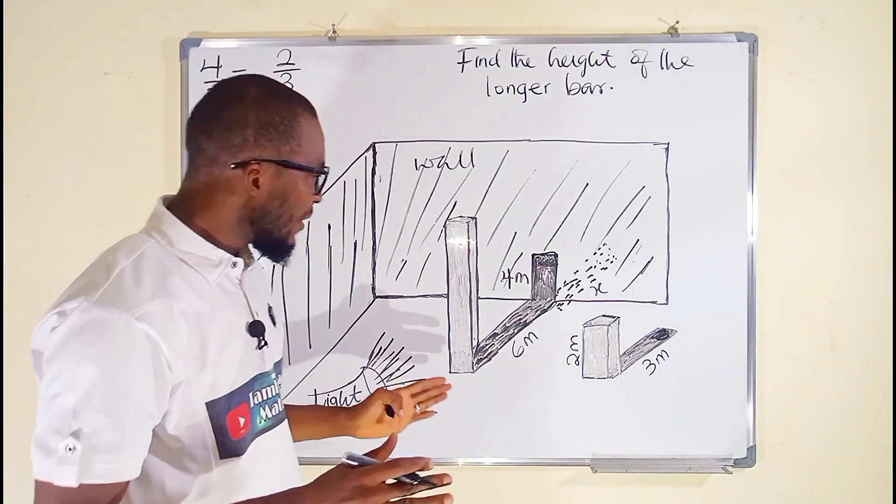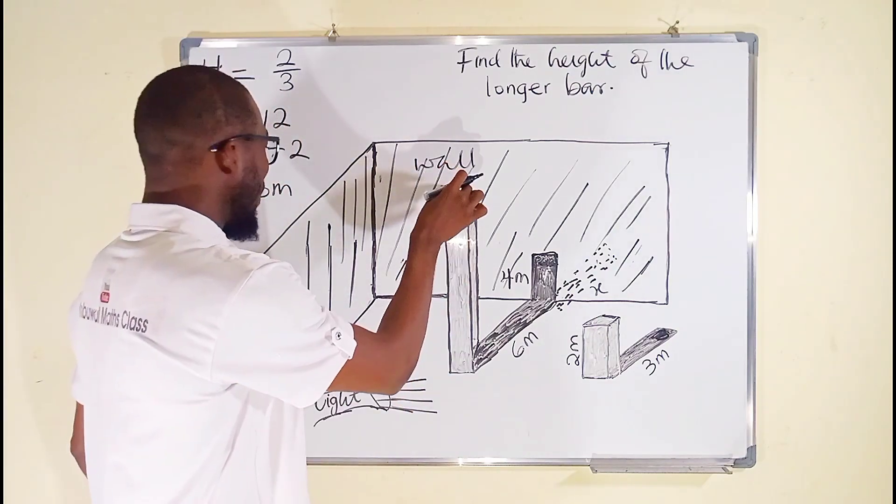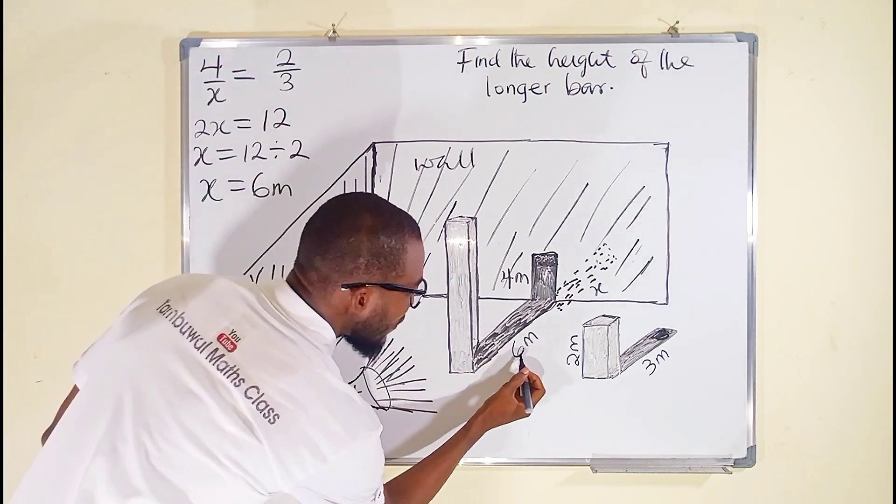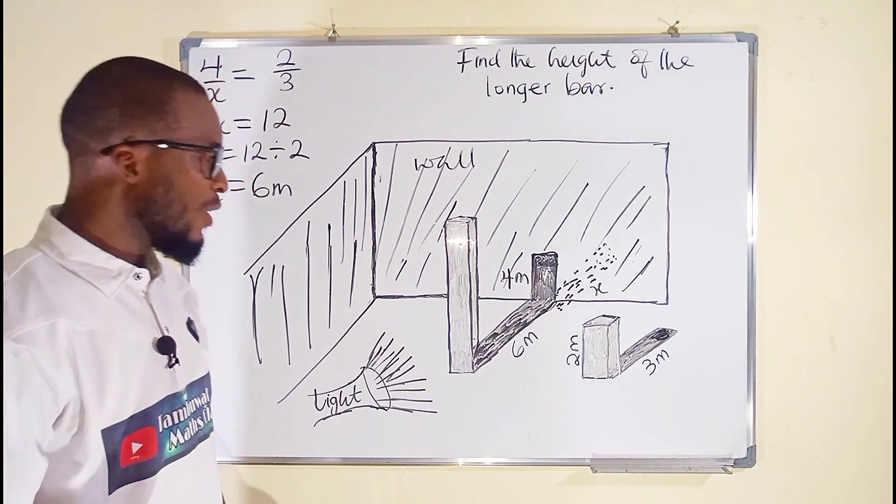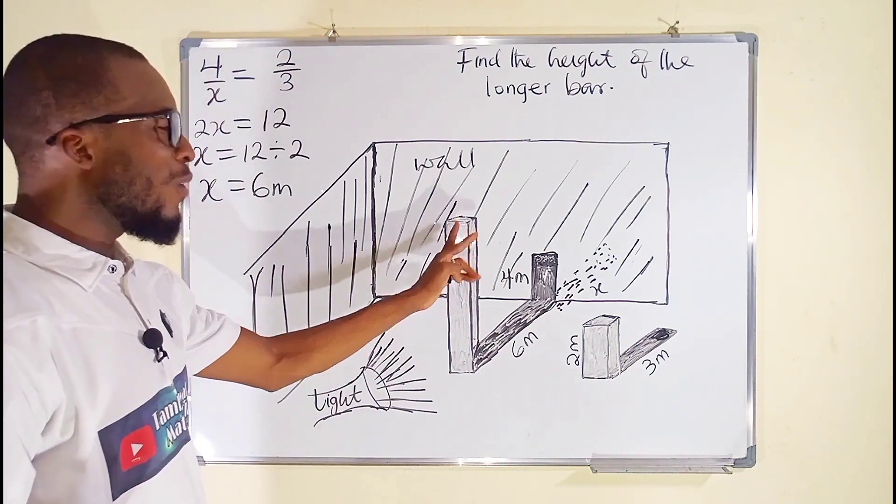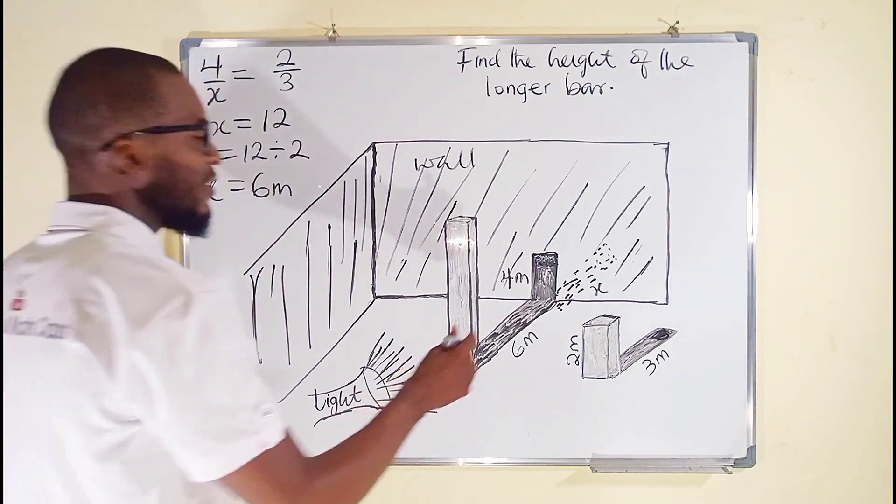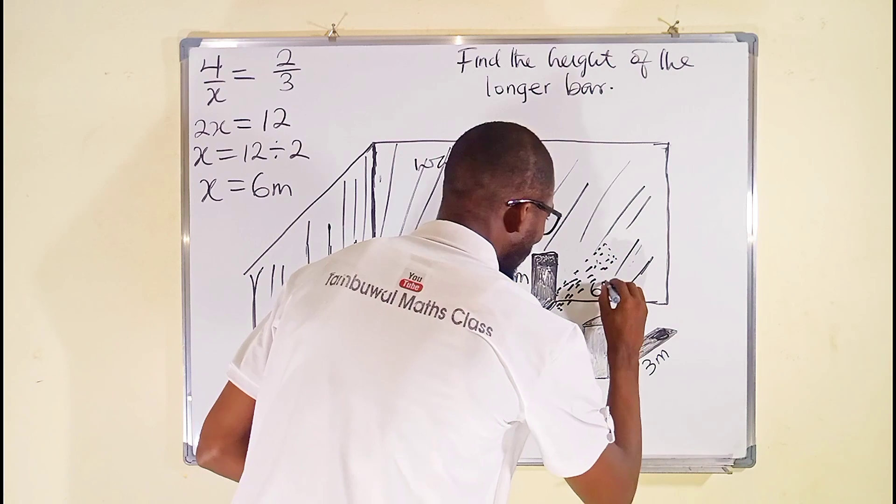x is equal to 6 meters. So this is to say that suppose this wall is absent here, the length of the shadow of this longer bar would have been 6 plus 6, because x is now equal to 6, which is equal to 12. So the length of the shadow of this longer bar is equal to 12 meters. Having obtained this value to be equal to 6, I can write it here for future use.